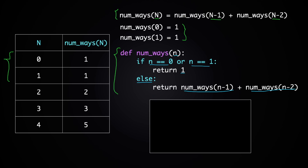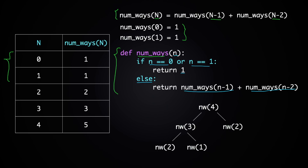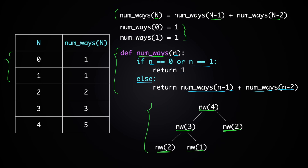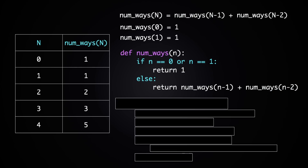But this recursive approach is not the most efficient. To see why, consider calling num_ways(4): it needs num_ways(3) and num_ways(2). Computing num_ways(3) also requires num_ways(2) — so num_ways(2) is computed twice. This redundancy gets worse as n grows larger, so let's see how we can fix it with dynamic programming.